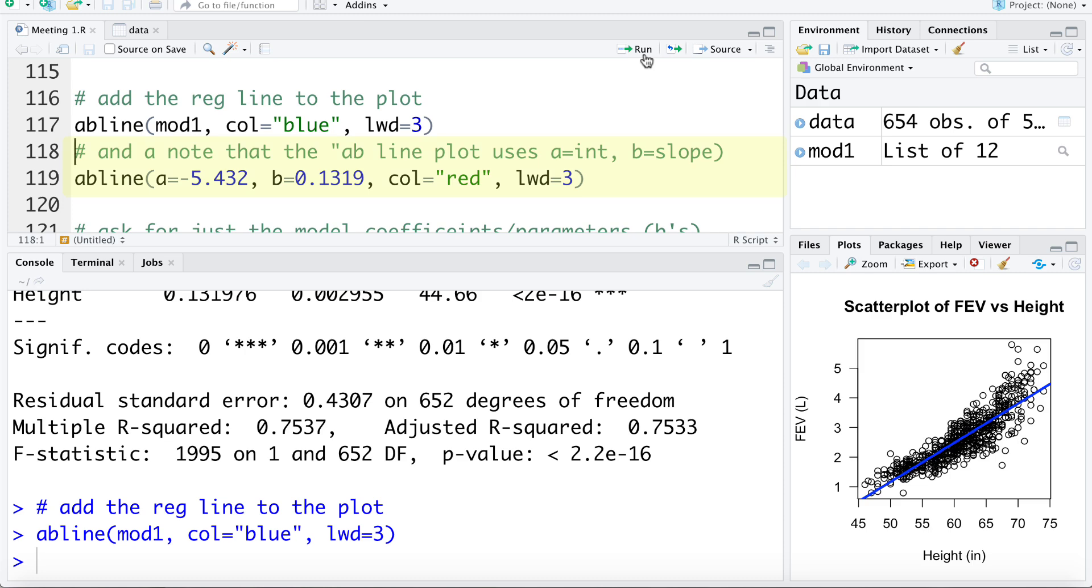I just want to show you also, we noted that the intercept for the model was negative 5.432 and the slope was 0.1319. So we can also add the line by specifying the intercept and the slope for the line. I'm going to do that here and make the line red. I just want to show you that it produces the same line.